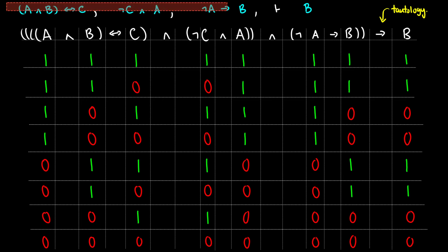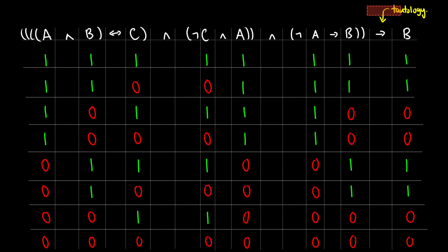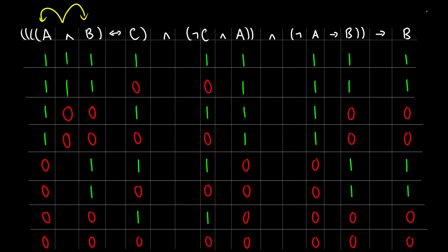I'm going to remove the bit at the top just so we have a little bit of space to show where we're getting information from, and let's build this truth table. So let's start with A and B — this takes information from the column with A and the column with B, and it's only true when both A and B are true. So it's going to be true with the first two rows, one and one. Then in the third and fourth row we have one zero, that's false. Fifth and sixth row, we have zero one, that's false. Seventh and eighth row, we have zero zero, that's false.